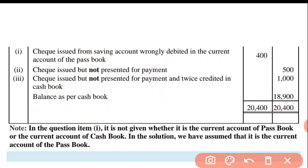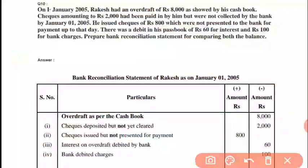Since it is not clearly given whether the current account passbook and cashbook balances match, we put down this question. Next question number 10: as on January 2005, Rakesh shows overdraft. Dekhiye, overdraft mein cashbook mein credit balance hai, to yeh minus mein jayega. As per cashbook hai, to yahan cashbook se question lagega — pichle question mein plus wale the, to yahan minus ke honge.